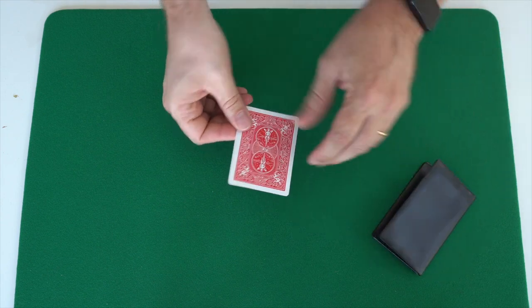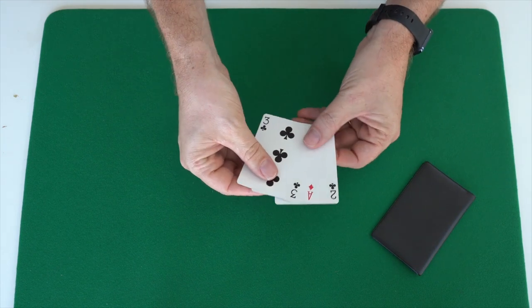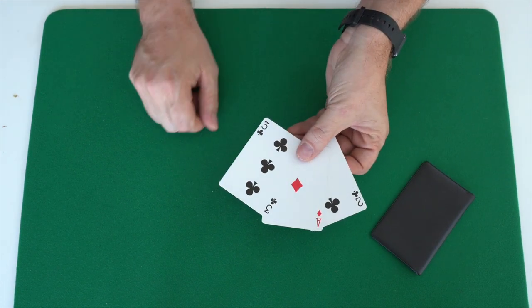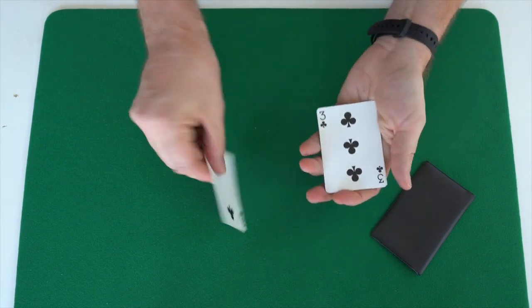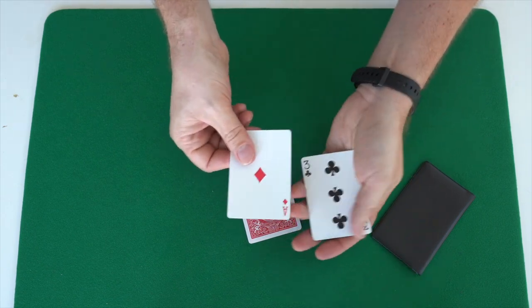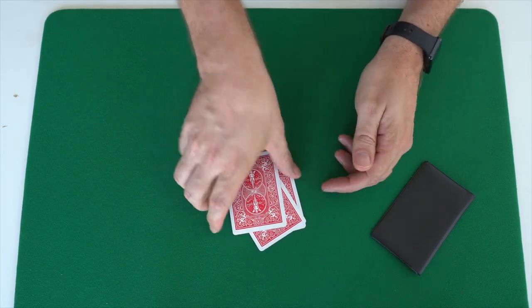As you can imagine, it's a trick with three cards and there is a red winning card and two black losing cards. Okay, so we have the two of clubs which is a losing card, the ace of diamonds which is a winning card, and the three of clubs which is a losing card.